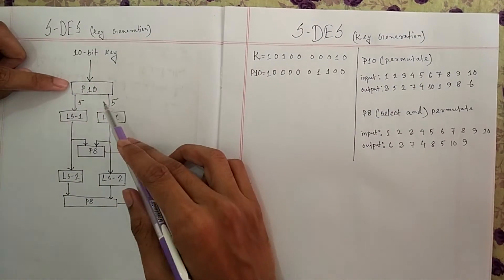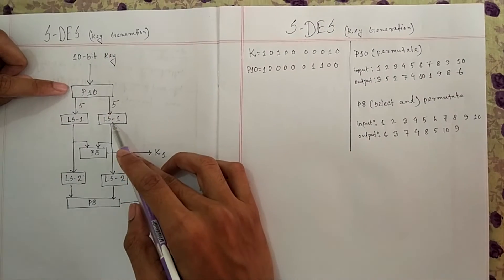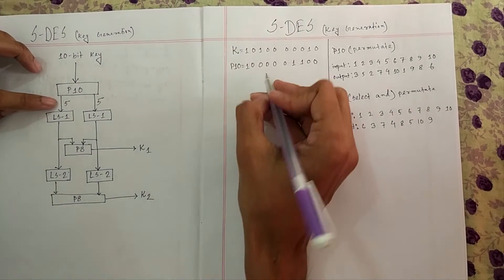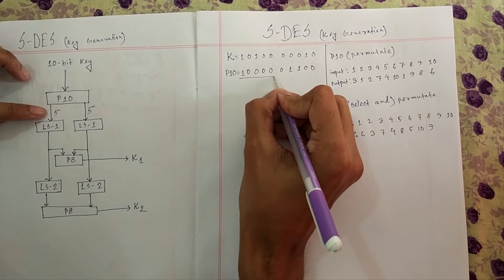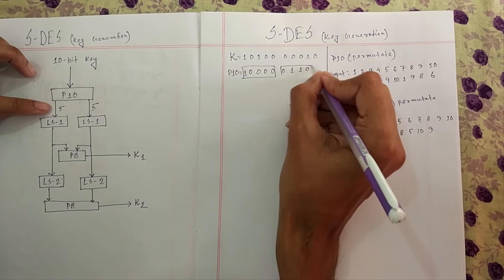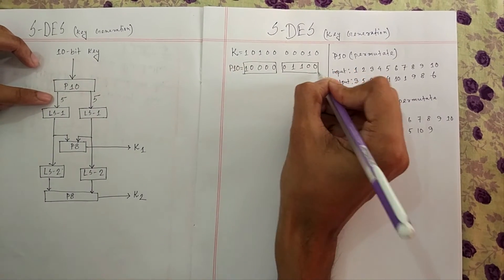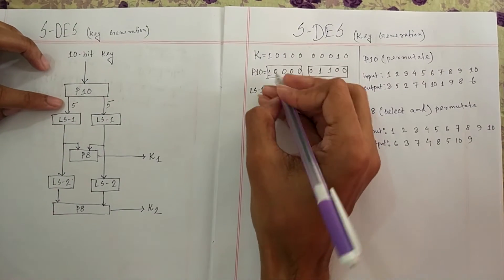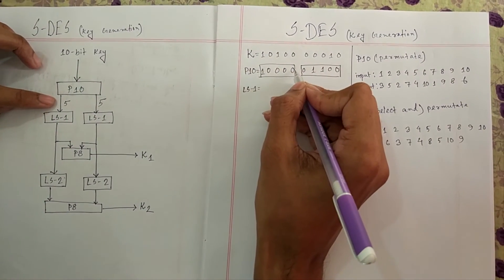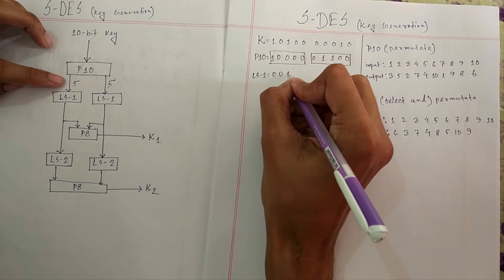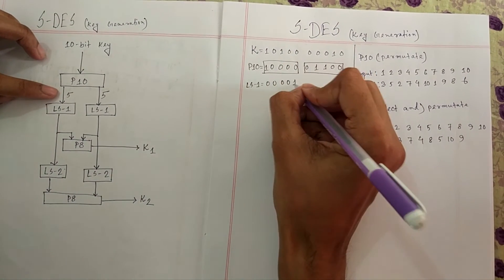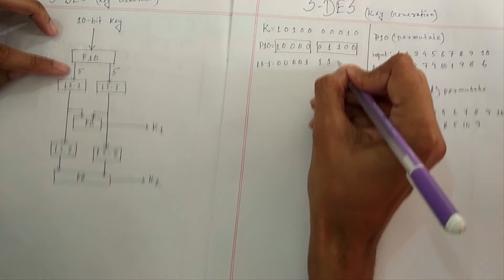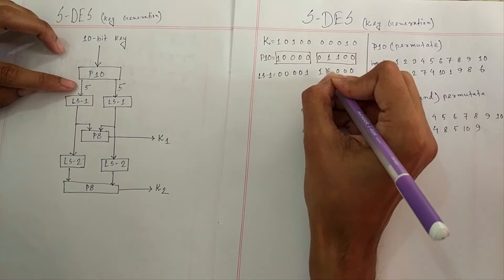From P10 we go to LS-1, which means left shift by 1. We divide into two parts of 5 bits each. For the left half, this 0 goes to the last position, giving 0, 0, 0, 0, 1. For the right half, this 0 goes to the last part, giving 1, 1, 0, 0, 0.